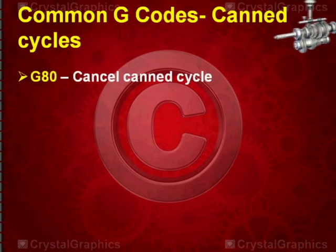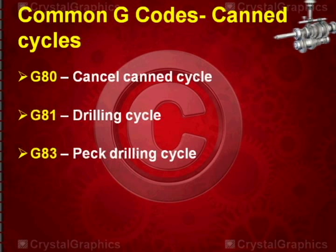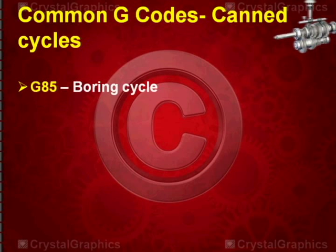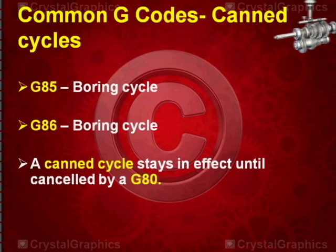Now we will discuss what is a canned cycle in G codes. G80 is cancel canned cycle. G81 is drilling cycle. G83 is peck drilling cycle. G84 is tapping cycle. G85 is boring cycle. G86 is boring cycle again. A canned cycle stays in effect until cancelled by G80.